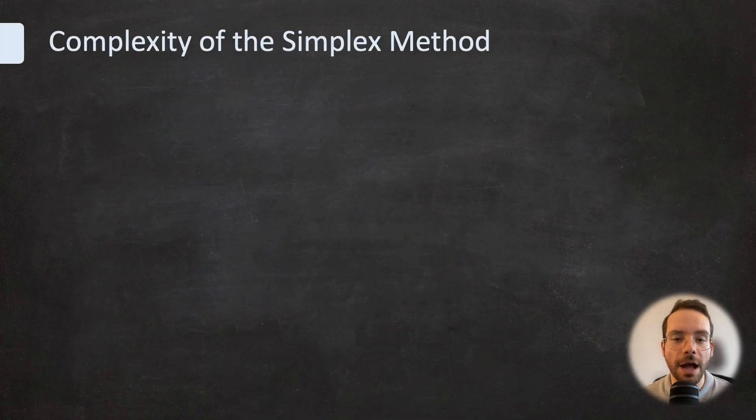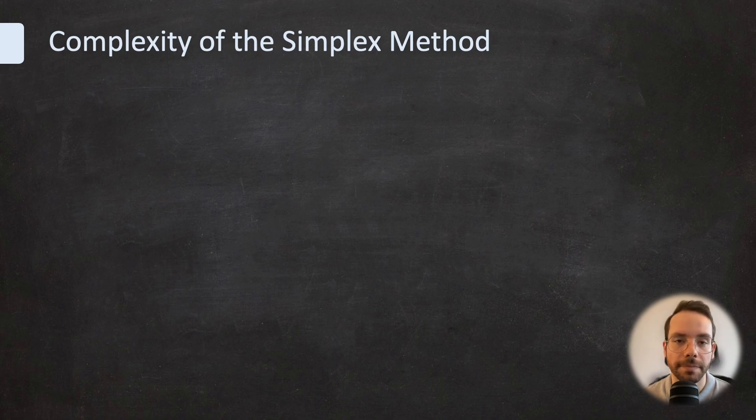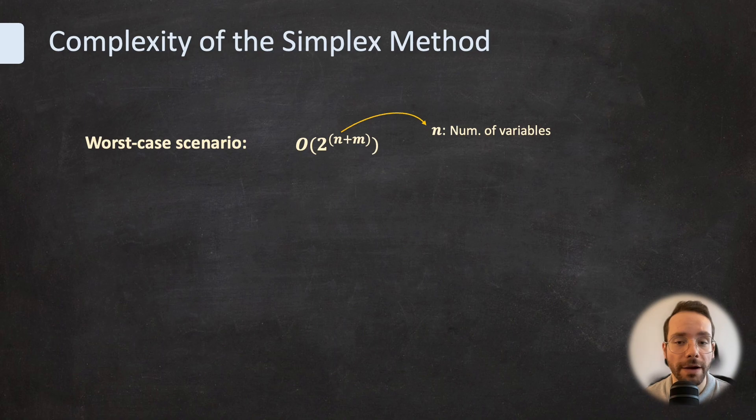Let's take a look at the complexity of the simplex problem. In the worst-case scenario, the simplex method can take an exponential amount of time, big O to the power of n plus m, to solve a linear programming problem where n is the number of variables and m is the number of constraints. This means that there exists a specific LP problem where the simplex method will take an incredibly long time to solve, even on the most modern machines.